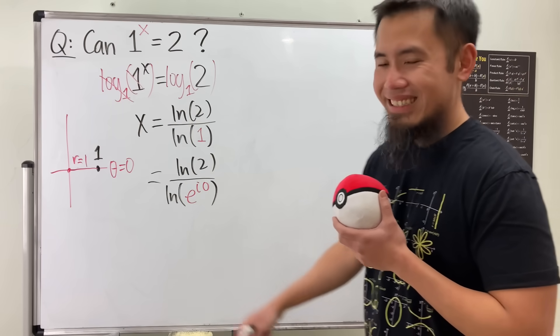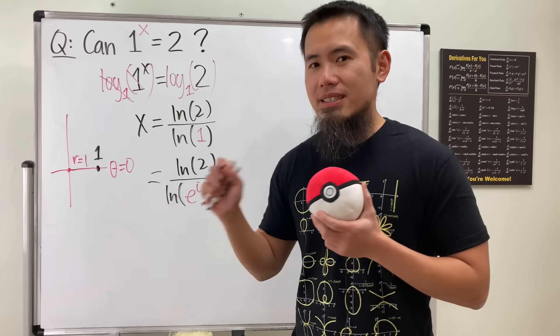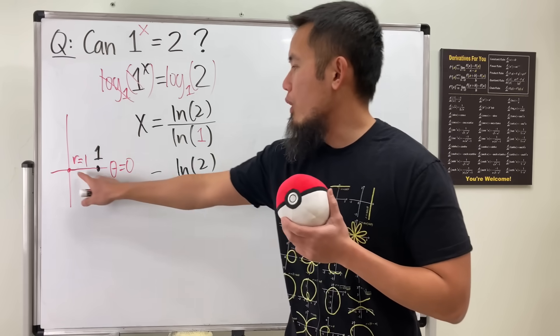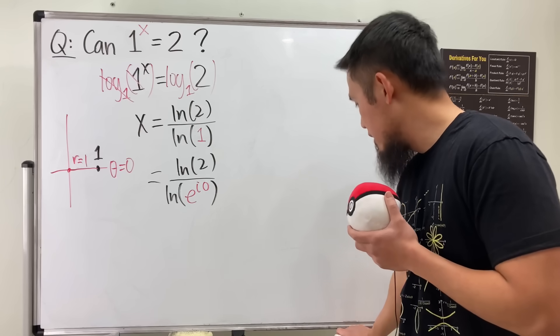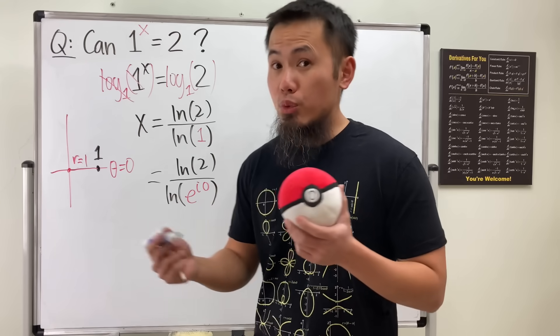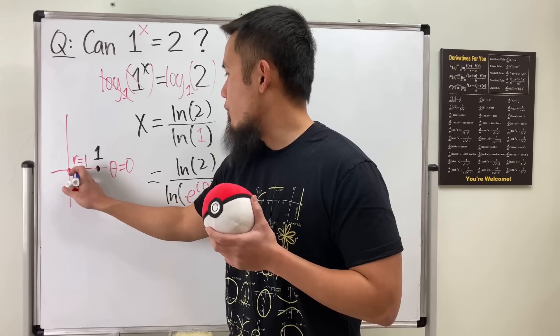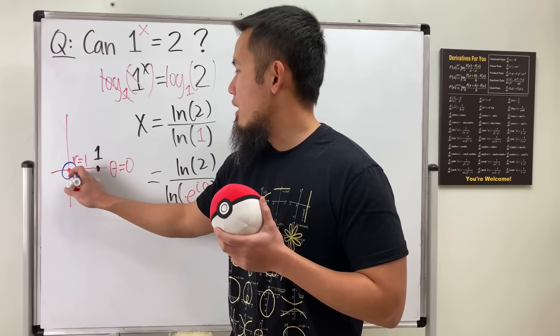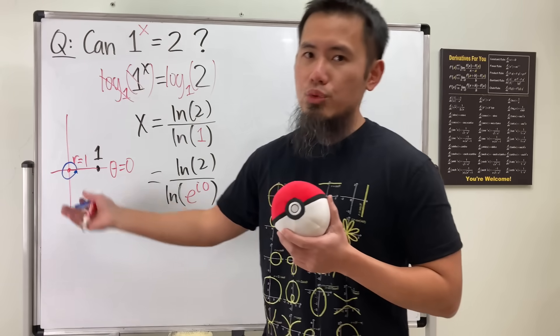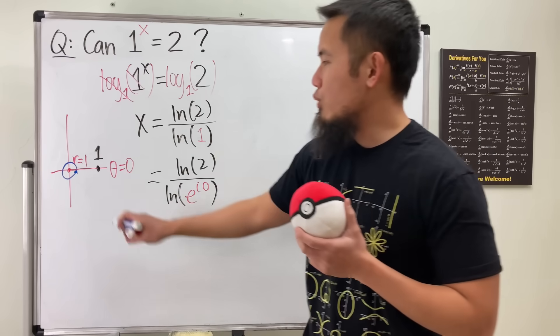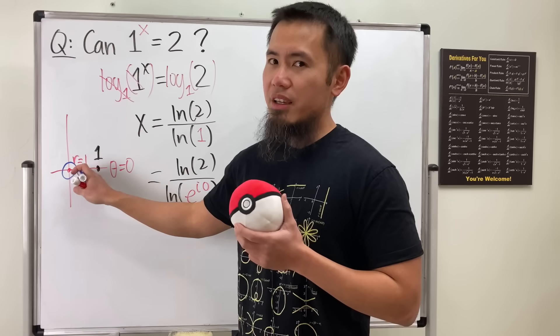But you know what? This 0 is not the only angle that will end up right here in this direction. Because if you really want to do some rotation, of course you can. Starting from here, you can rotate 360 degrees. But we use radians now, so say that as 2π. And if you would like, you can do the reverse, negative 2π.